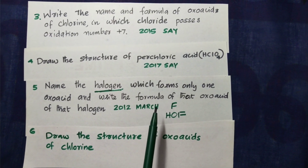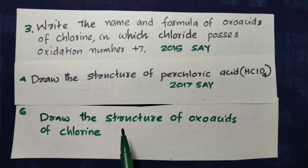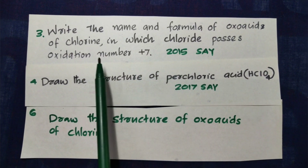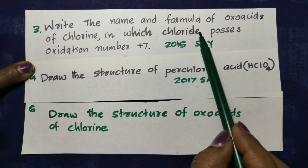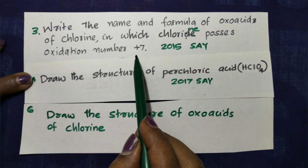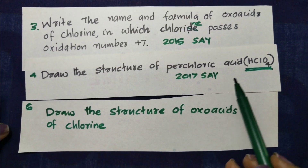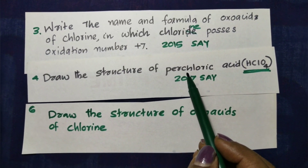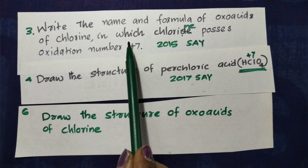We will talk about chlorine and bromine. For chlorine, the oxidation state can be plus seven. The formula HClO4 is called Perchloric Acid, which means the oxidation state of chlorine is plus 7, so the answer is plus 7.